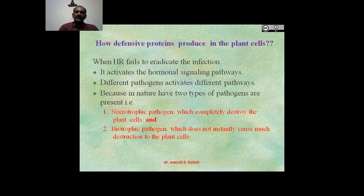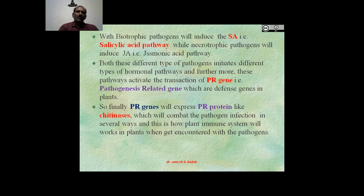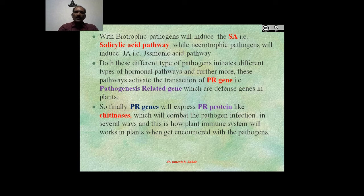Different pathogens activate different types of pathways, because in nature there are two types of pathogens: necrotrophic pathogens, which completely destroy plant cells, and biotrophic pathogens, which do not instantly cause much destruction to the plant cell. Biotrophic pathogens induce the SA, that is salicylic acid pathway, while necrotrophic pathogens induce the JA, that is jasmonic acid pathway. Both these different pathways activate the transcription of PR genes — pathogenesis-related genes — which are defense genes in plants. PR proteins like chitinases are produced, which combat pathogen infection in several ways. This is how the plant immune system works when encountered with plant pathogens.